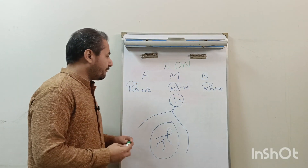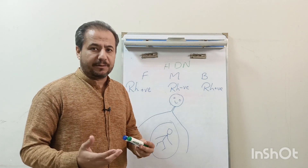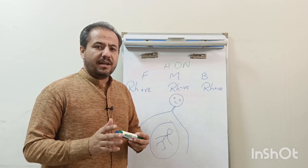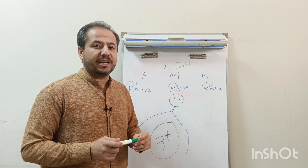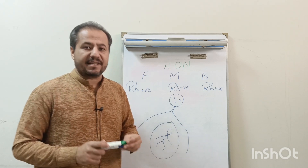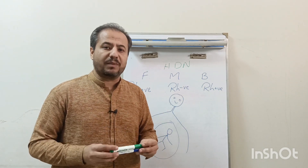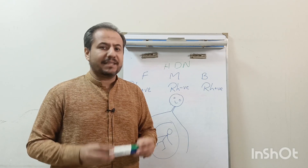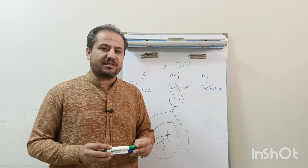Hemolytic disease of the newborn is basically a disorder of the newborn in which there is increased hemolysis. Due to this hemolysis, the bone marrow responds, and on the basis of bone marrow response there is increased concentration of nucleated RBCs present in the peripheral circulation. These nucleated RBCs are known as erythroblasts, and when there is increased concentration of erythroblasts present in the peripheral circulation, we call that disorder erythroblastosis. Therefore, hemolytic disease of the newborn is also known as erythroblastosis fetalis.